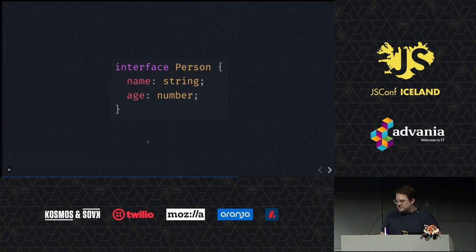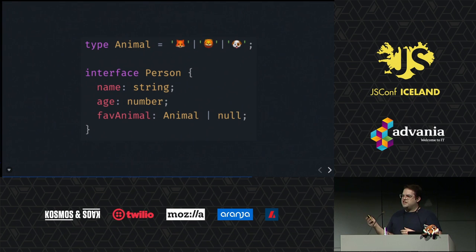Interfaces — this is going to be our last type, and then we'll go through a short example. Interfaces are how you type objects. This looks a lot like plain object notation: you have a colon, and then instead of the value, you put your type name. You can also use all of these other features inside your interfaces. Here we have a union between a bunch of animals, you can have your favorite animal, you can make it optional by allowing nulls, and then TypeScript will help you check null before you try to access those values.